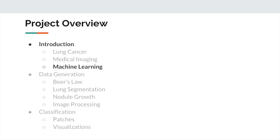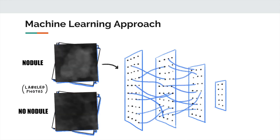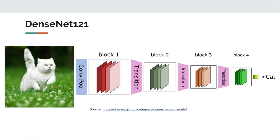To detect nodules in a given radiograph, a deep convolutional neural network is trained to predict nodule presence. As in the classical example of attempting to classify whether an image contains a cat or a dog, the machine learning model is fed a large dataset accompanied with the image labels. Each iteration, the parameters are tuned to optimize the model's predictions on future images. In our case, we want to detect whether or not a certain patch of the radiograph contains a nodule. We use the DenseNet architecture, which has a repeating block substructure and many other advantages over traditional convolutional neural networks.